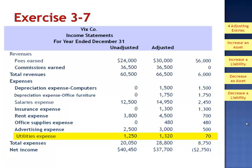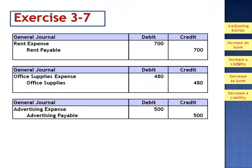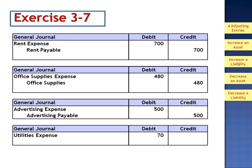The last item is utilities expense. Its balance increased from an unadjusted balance of $1,250 to an adjusted balance of $1,320, increasing the expense by $70. Chances are this is also an accrual of a payable — we've consumed the utilities but have not yet been billed. So we would be increasing a liability, debiting the income statement with the expense account, and crediting the balance sheet with a payable. The probable adjusting entry is a debit to utilities expense and a credit to utilities payable.